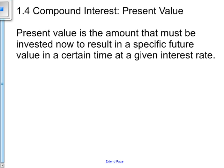Section 1.4 is titled Compound Interest Present Value. Present value is the amount that must be invested now to result in a specific future value in a certain time at a given interest rate.